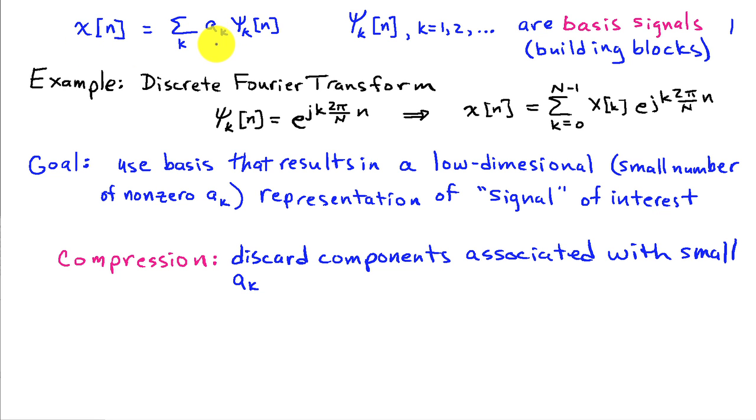And then use my knowledge of the bases that I've chosen to reconstruct x of n from the ak that have been stored. And the gain that I get in terms of storage is proportional to the original dimension of x and the number of coefficients that I need to store in the ak's.